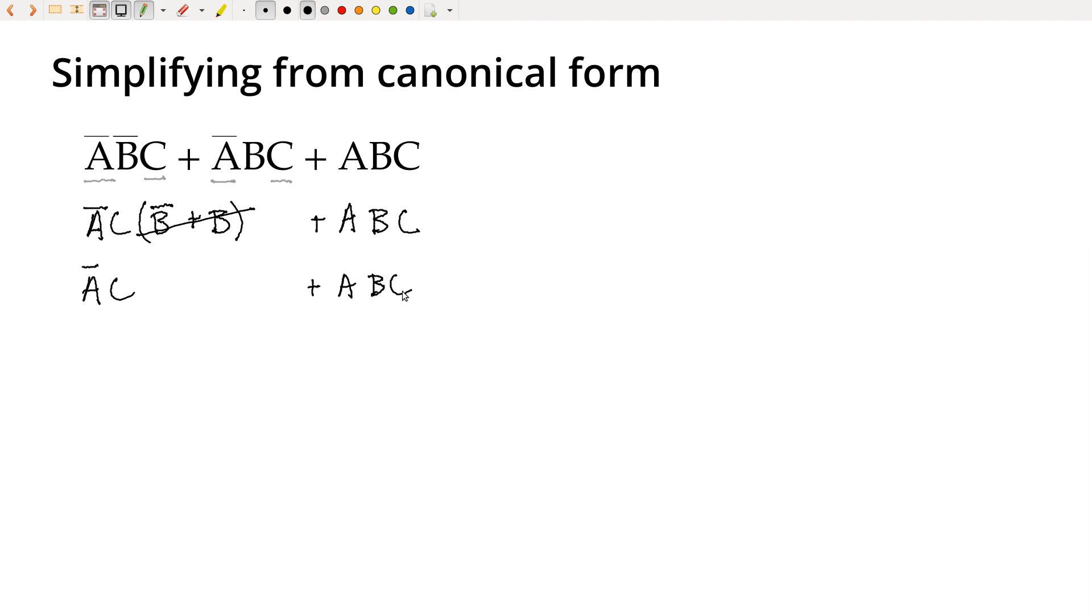Now we've simplified some things, and we're down to two terms. One of those terms only has two variables, which is better than where we started. And it might seem like we're getting stuck, or we could factor out the C here, but we still end up with two terms.